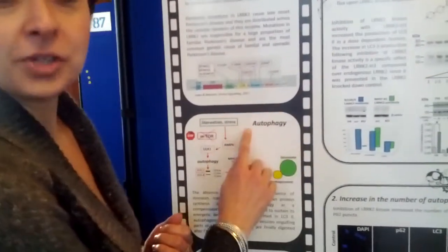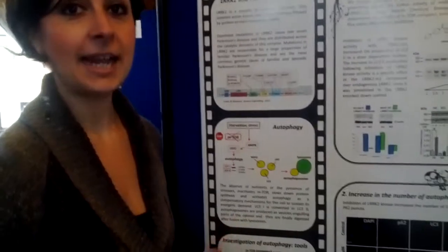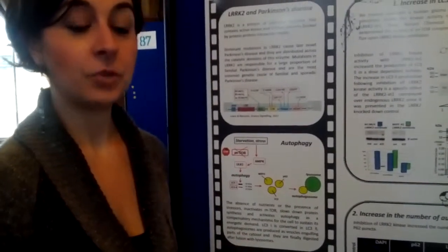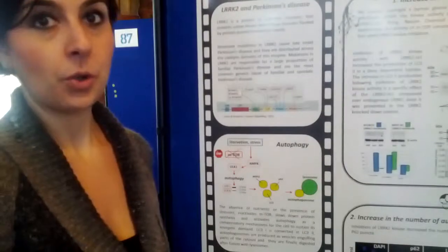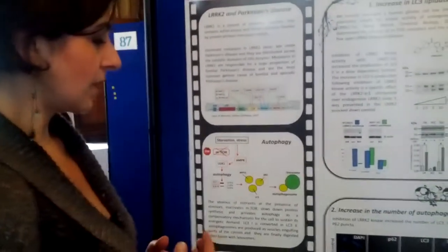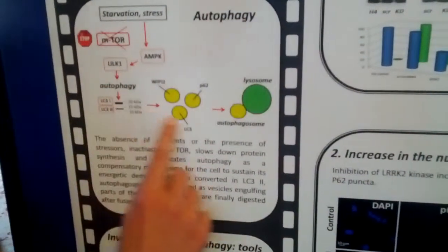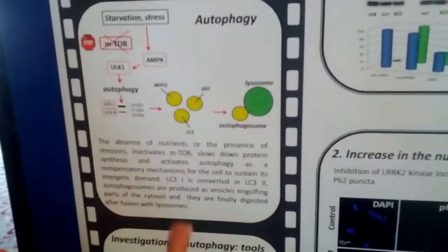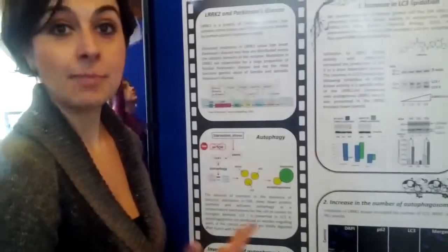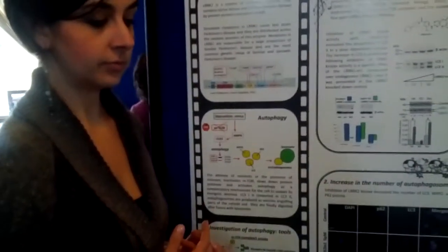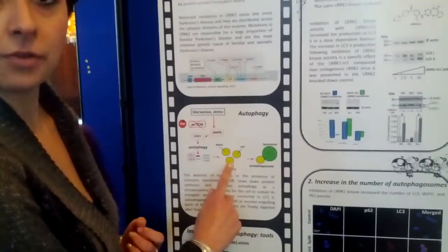There is this process called autophagy, which is the process that the cell uses to get rid of unwanted stuff, like proteins which are misfolded and are no longer of use for the cell, or organelles that are damaged. This is a very important process — all cells are doing autophagy. But what we think is that an impairment in this autophagy process can cause cell death, because the cell is no longer able to get rid of damaged things. And what we think is that LRRK2 is implicated in the control of this process.